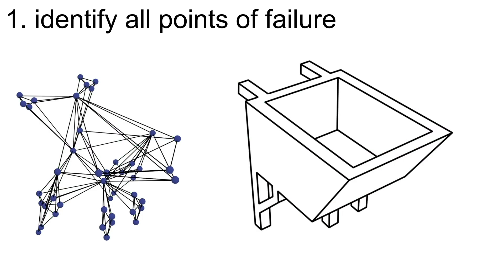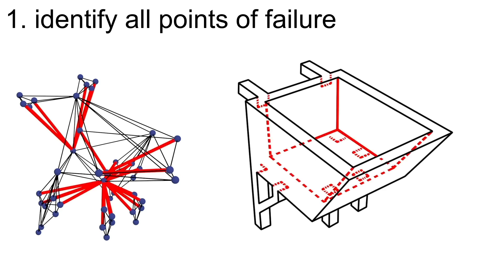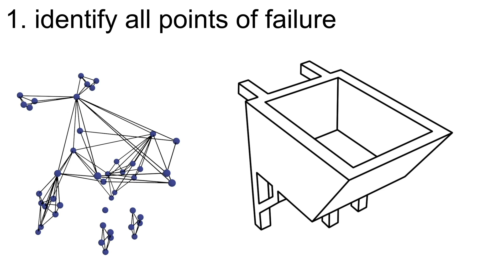Since finger joints are weak against tension, FastForce identifies joints that can be subjected to tension load and removes them from the graph. In case of the wheelbarrow, this splits the graph into disconnected components, which means that some points of failure will also be completely disconnected under load.